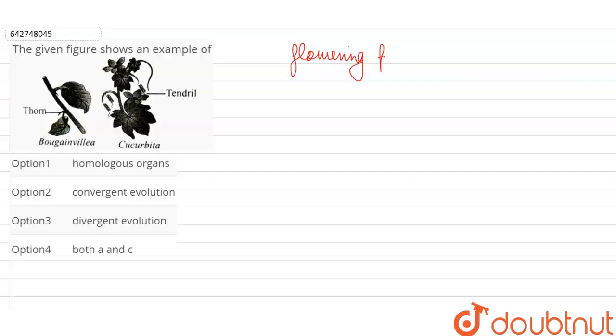They are both flowering plants, so we can say they fall under the same group in our plant kingdom. So they are closely related to one another, but what are we seeing over here? On one hand, in the bougainvillea plant, they are showing us the pointed thorn, whereas in the other plant they are showing us the elongated slender thread-like tendril.